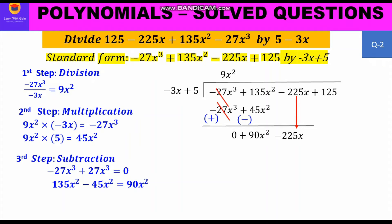We apply the three steps again. For division, 90x² divided by −3x gives −30x. Alternatively, what number multiplied by −3x gives 90x²? That also gives −30x. For multiplication, we multiply −30x with the divisor −3x + 5: (−30x)(−3x) = 90x² and (−30x)(5) = −150x.